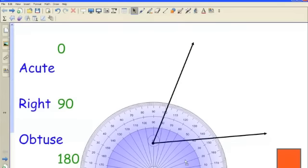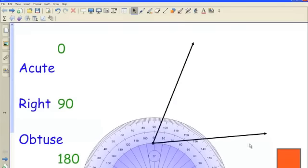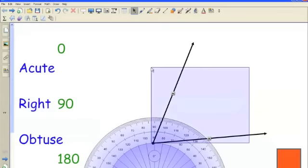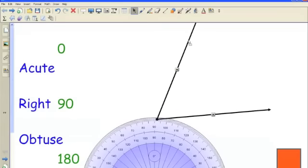So the first thing you want to do when you're measuring angles is you want to estimate what type of angle it's going to be in the first place, if possible.